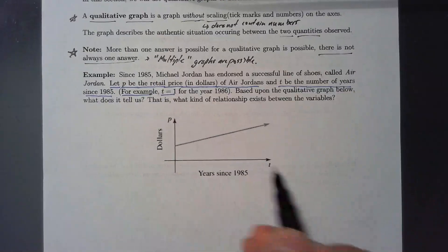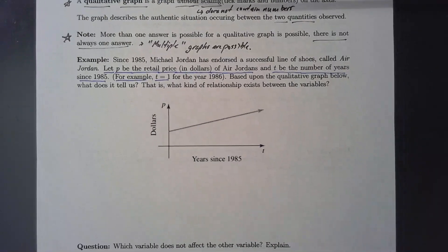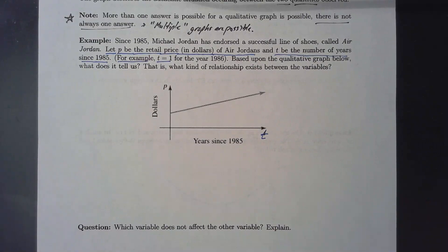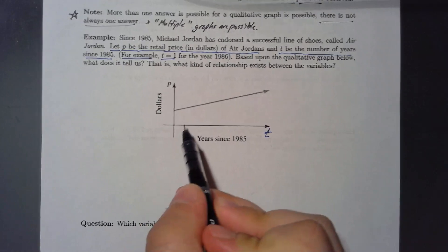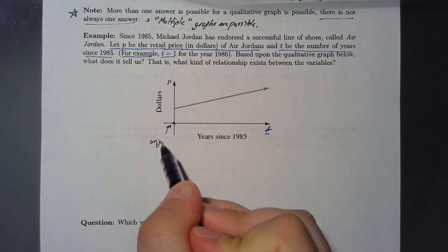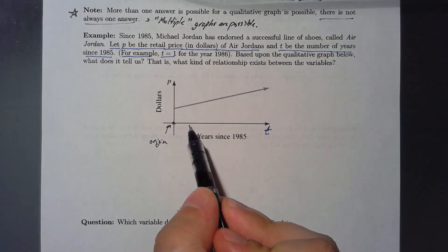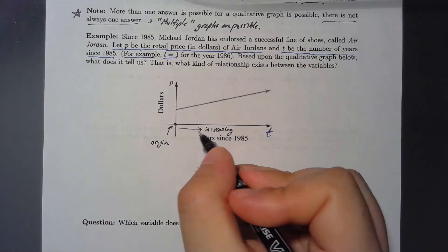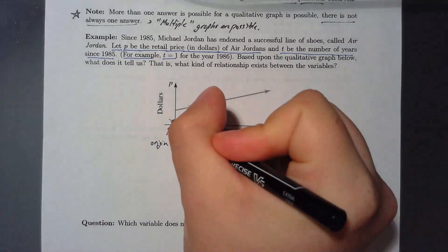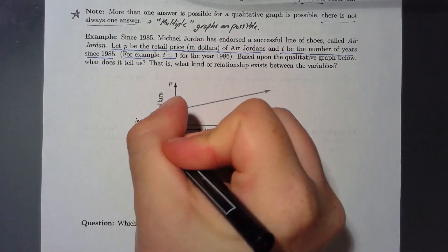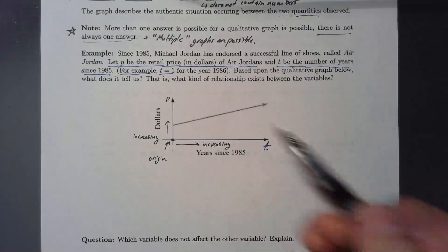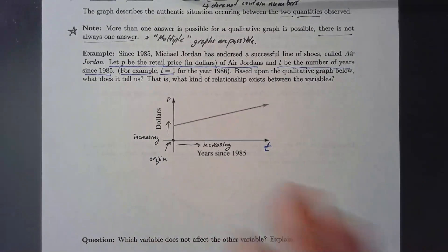Based upon the qualitative graph, the T variable is on the horizontal axis and the P variable is on the vertical. When we start at the origin and go to the right, T is increasing. Going up in the P direction, that's increasing as well. When we talk about qualitative graphs, we don't really look at the left or down direction, because that implies negative values.